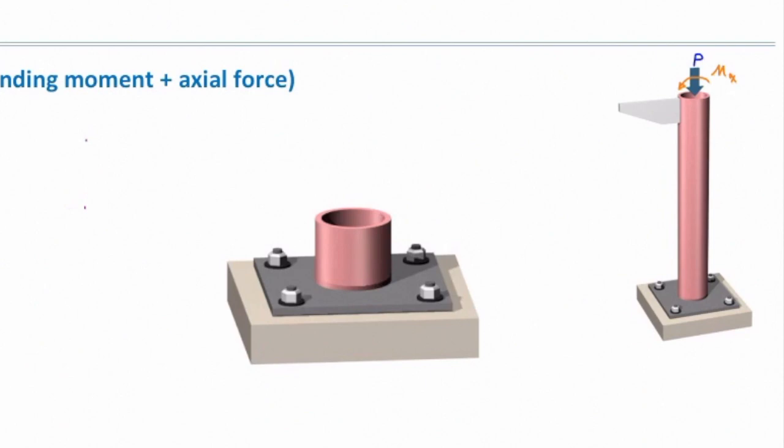I'm going to cut the section somewhere on the bottom of the column and put the forces acting on that cut section. There is a moment and there is an axial force acting on the cut section. The moment in this case is acting about the x-axis, the one shown in orange dashed line.